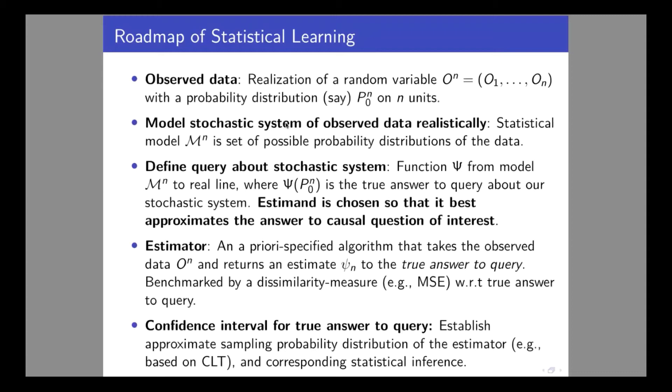The next question becomes: what is the estimand — what are you trying to learn about the data distribution? Since we don't have coefficients from parametric models, we have to carefully define what feature of the true probability distribution we are trying to learn. We talk about a mapping psi, which maps a candidate probability distribution of the data into a number or vector of numbers representing your answer to the question of interest. Psi of P0 would represent the estimand.